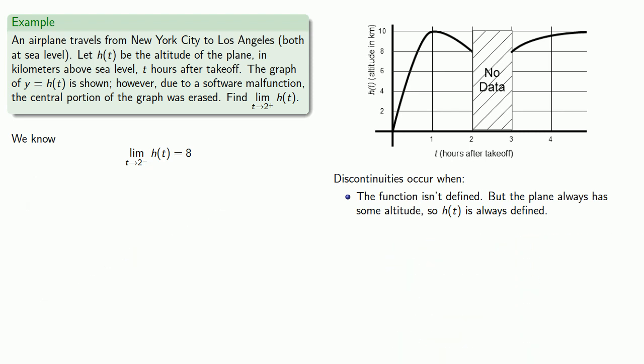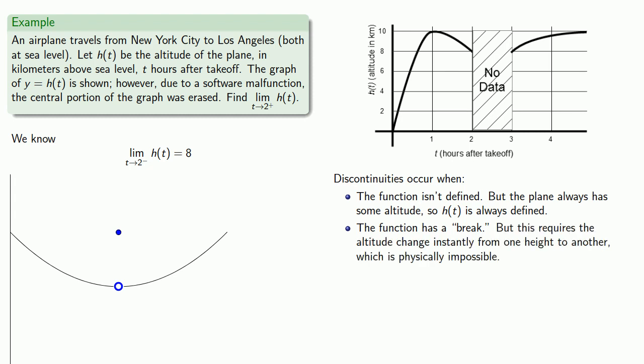The other possibility is the function has a break. But this would require that the altitude change instantly from one height to another, and that's physically impossible. So this situation can't apply either. And what that means is that H of T must be a continuous function.